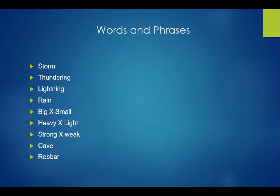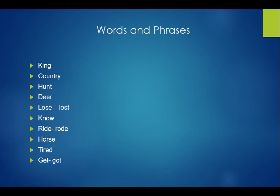Opposite of strong is weak. The robbers were in the cave, and the thieves were there. There was a king — raja — who went hunting for deer. He was chasing the deer. He lost his way — he lost his way. Present form of lost is lose — lose, lost, lost. He didn't know where he was — no jaana means jaanna.